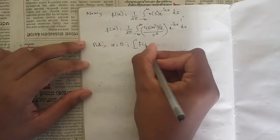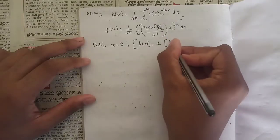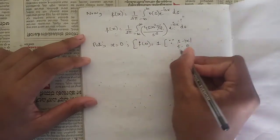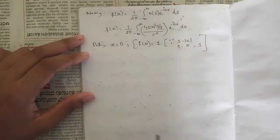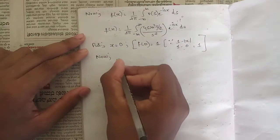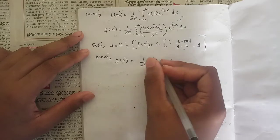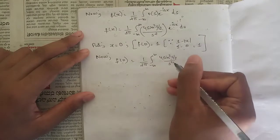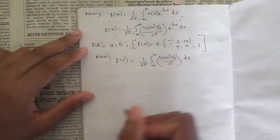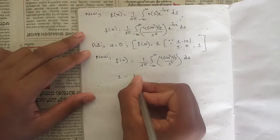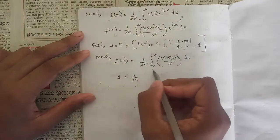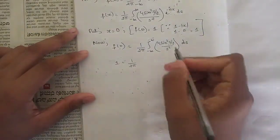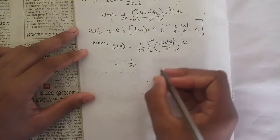When x = 0, f(0) = 1 - |0| = 1. So the equation becomes 1 = (1/2π) ∫_{-∞}^{∞} 4sin²(s/2)/s² ds. Now we need to check if the integrand is an even function so we can replace the limits from -∞ to ∞ with 2 times the integral from 0 to ∞.